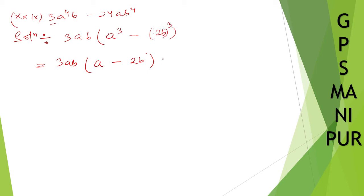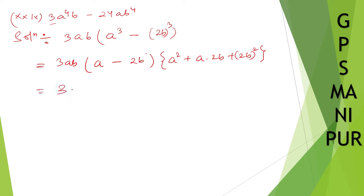Applying A cubed minus B cubed equals (A minus B)(A squared plus AB plus B squared): we get 3AB times (A minus 2B) times (A squared plus 2AB plus 4B squared). That is the answer. I hope the answer is correct.